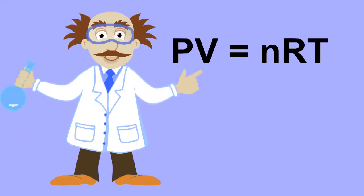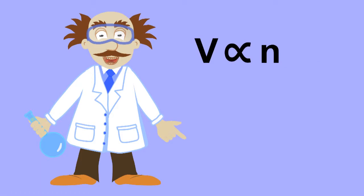Let's have a look at some consequences of this law. If the temperature and pressure of gas are held constant, then it implies its volume is directly proportional to the number of gas particles. What does this mean?